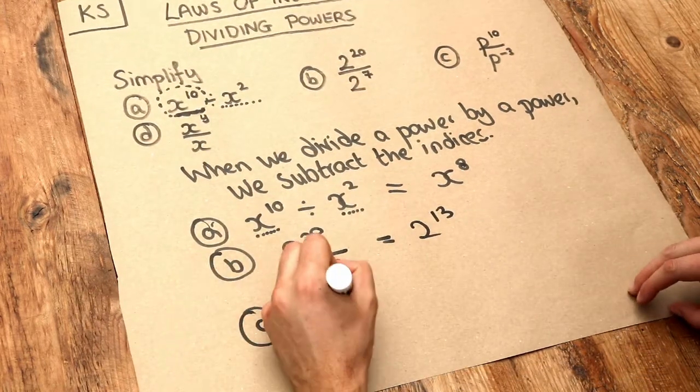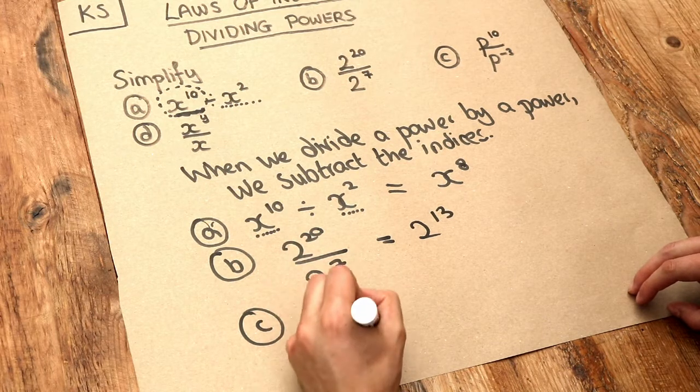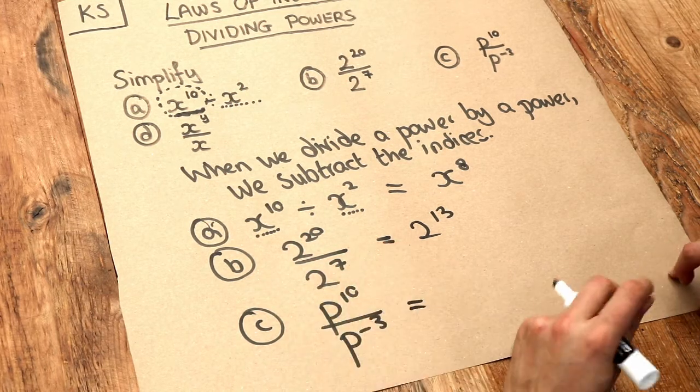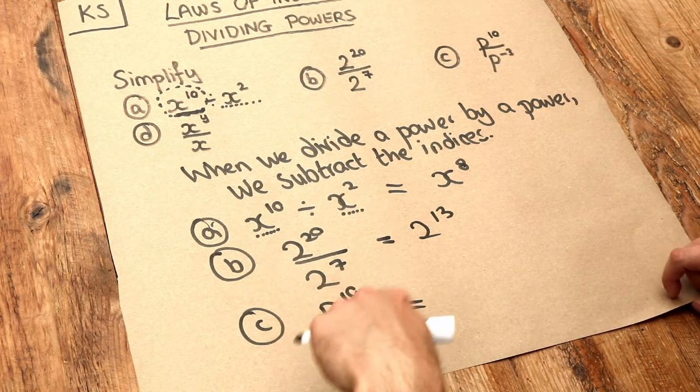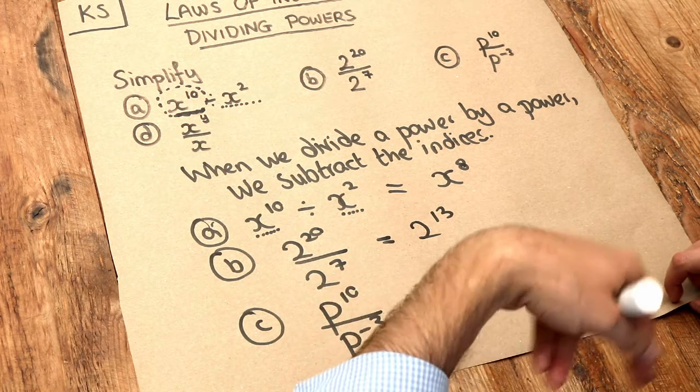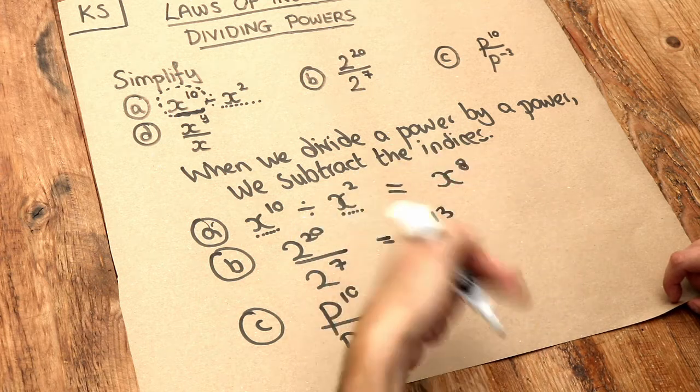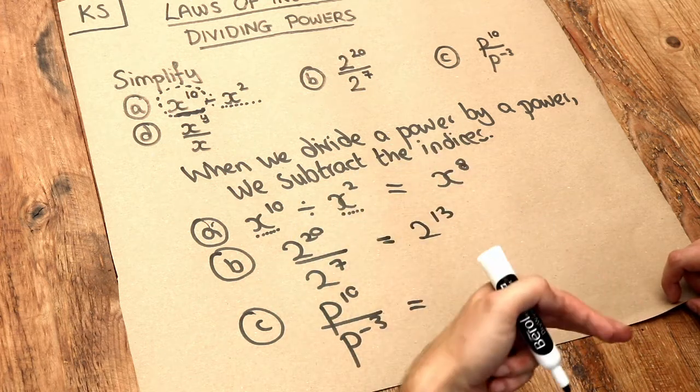For c, we've got p to the 10 divided by p to the minus 3. We still subtract the indices: 10 minus minus 3. Remember, when we subtract a negative, we add.